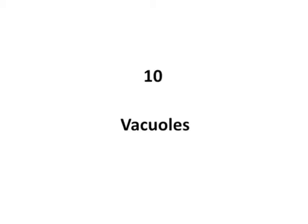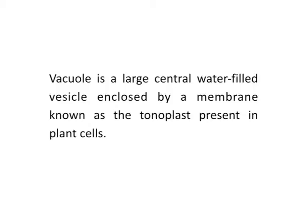The next structures are the vacuoles. A vacuole is a large, central, water-filled vesicle enclosed by a membrane known as the tonoplast, present in plant cells. The function of the vacuole is to maintain the osmotic pressure and turgidity of the cell and also stores useful materials and digests waste proteins and organelles. Vacuoles in animal cells, however, are much smaller and commonly used to temporarily store materials or to transport substances.